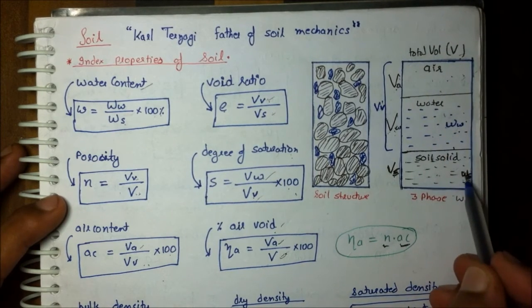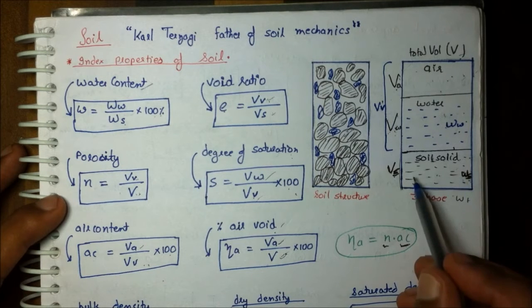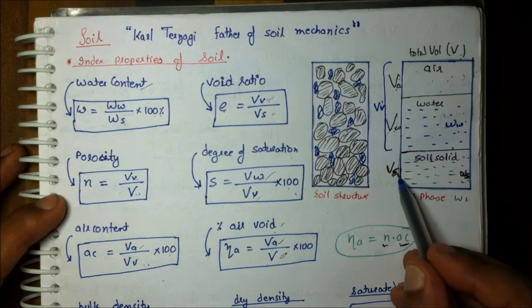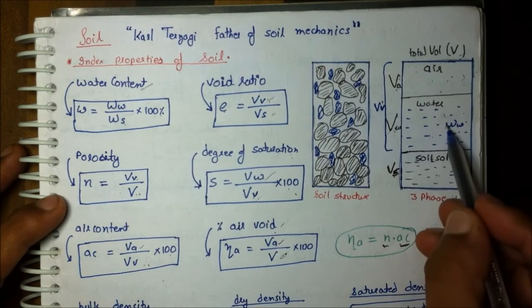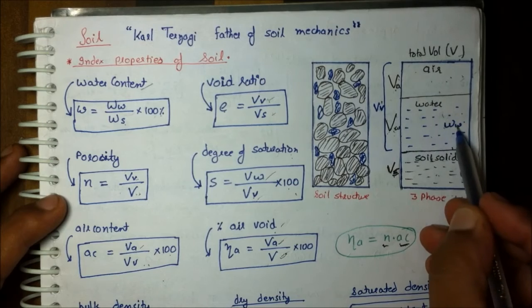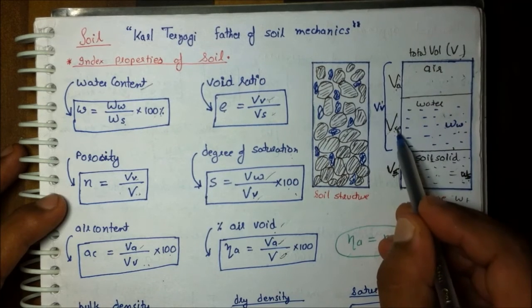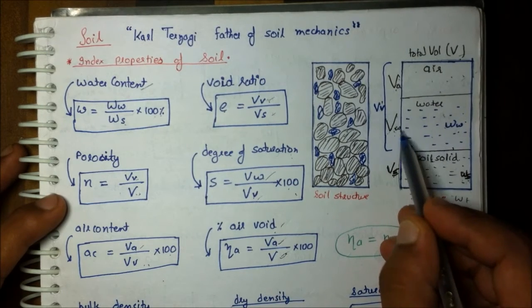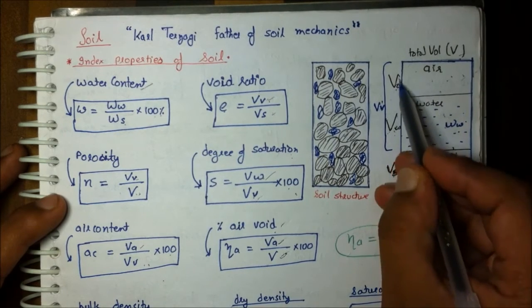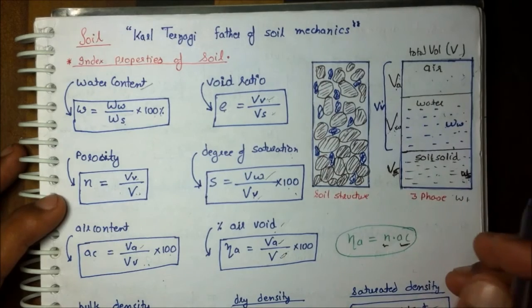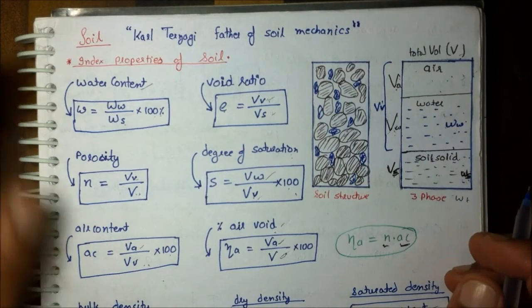Soil solids are denoted by W_S for the weight of solid and V_S for the volume of solid. Then W_W is the weight of water, V_W is the volume of water, and V_A is the volume of air. Air does not contribute any weight.